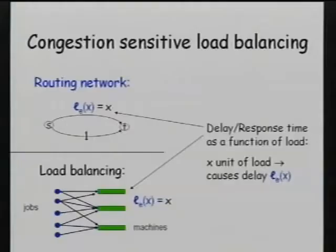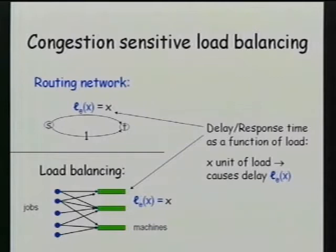Here is a very simple model: a load balancing setup with two pictures illustrating the same story. On top, think of driving a car from S to T — a congestion-based routing model with two road options. The upper road is congestion-sensitive: if X users go on the path, their delay is X. The lower path is congestion-insensitive with constant delay of 1. Below, the same story is told as jobs choosing between servers, where the response time is L_E(X), a function of how server E responds to congestion.